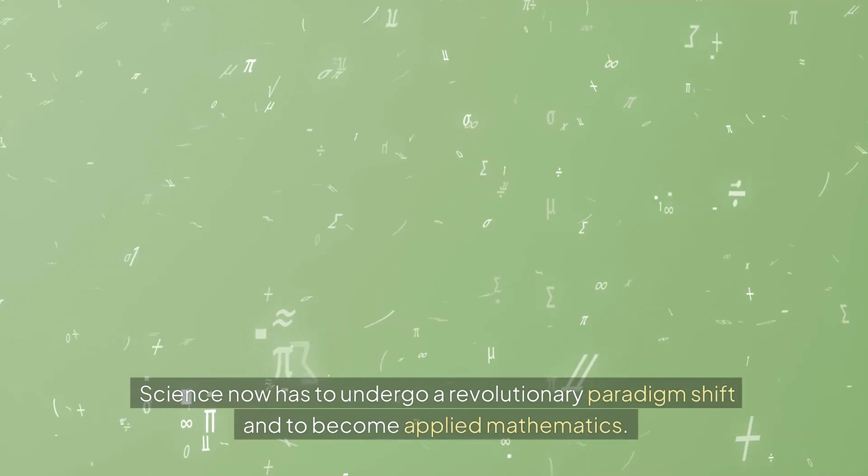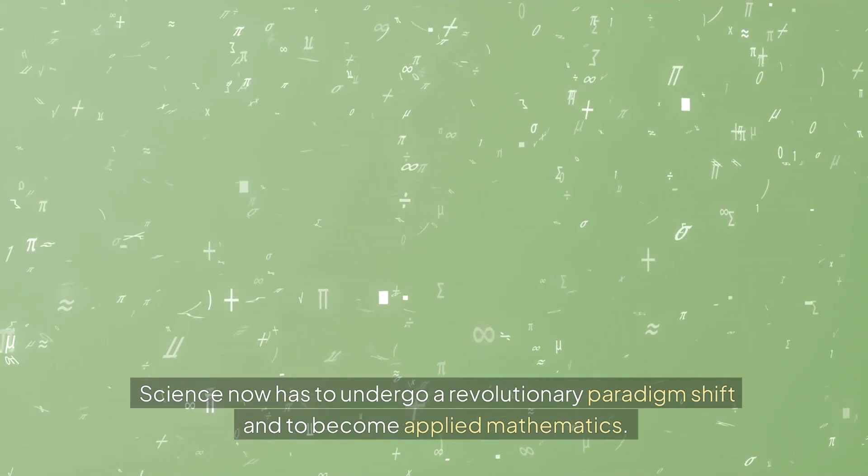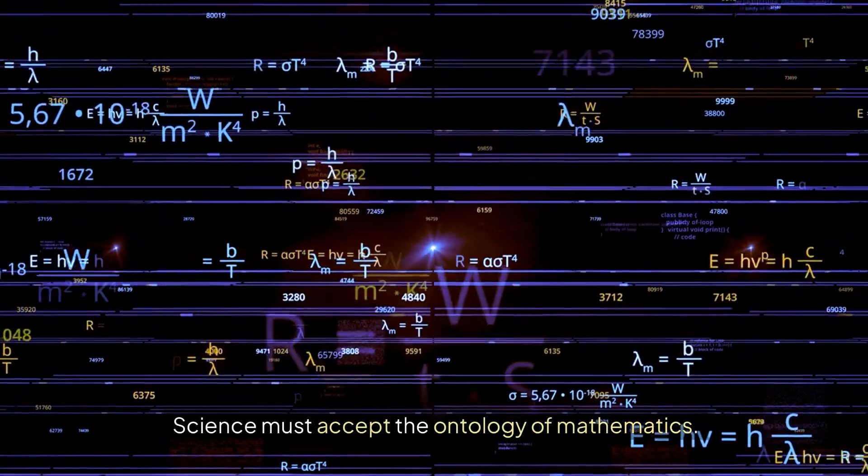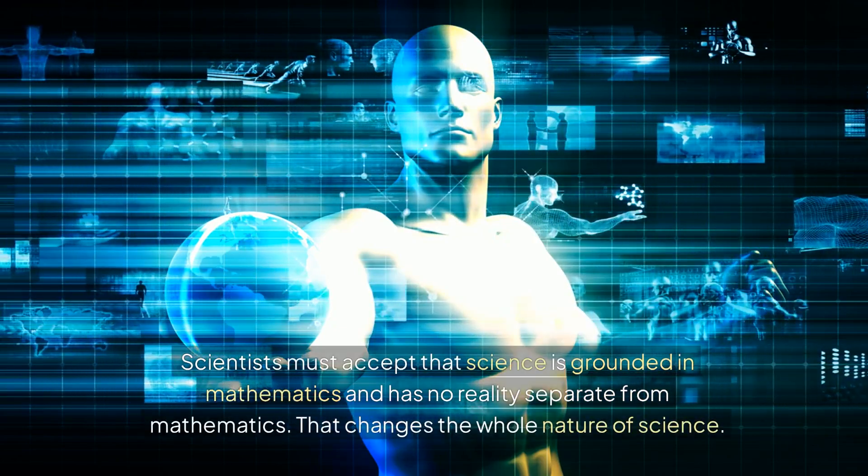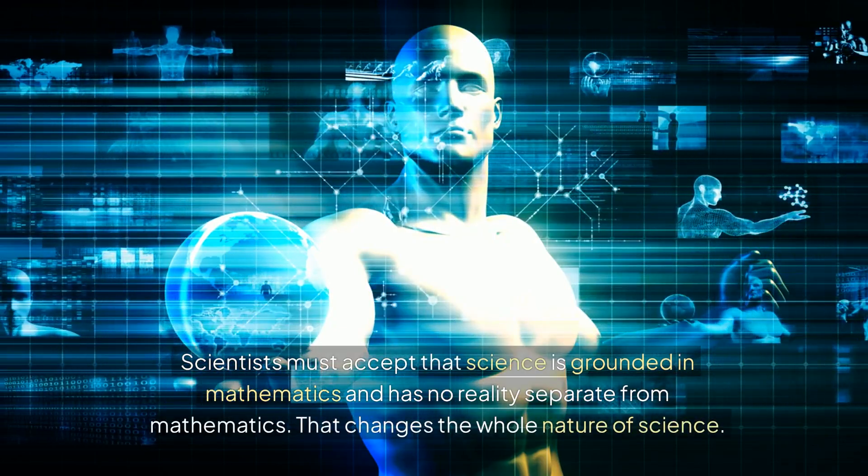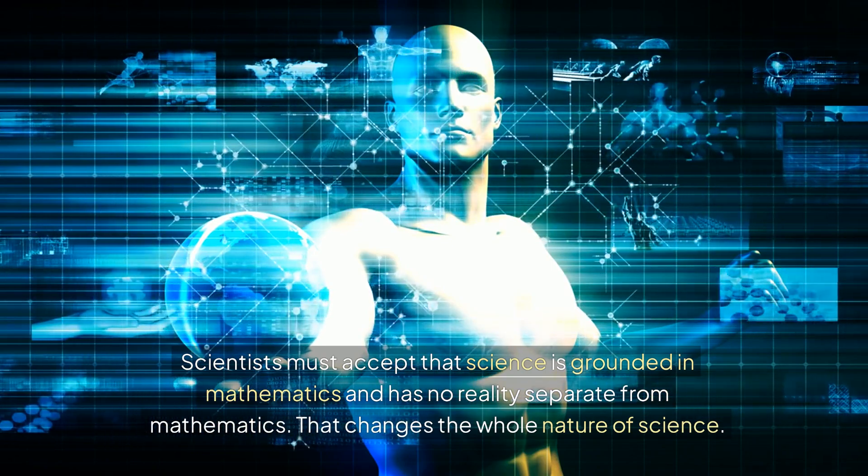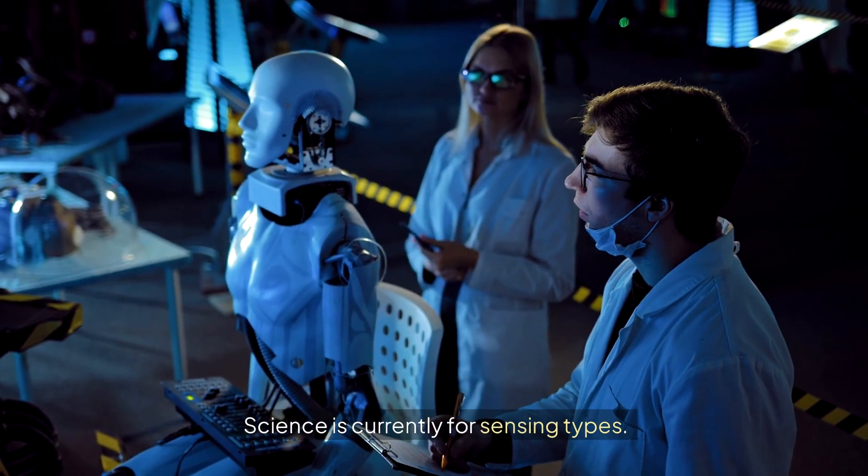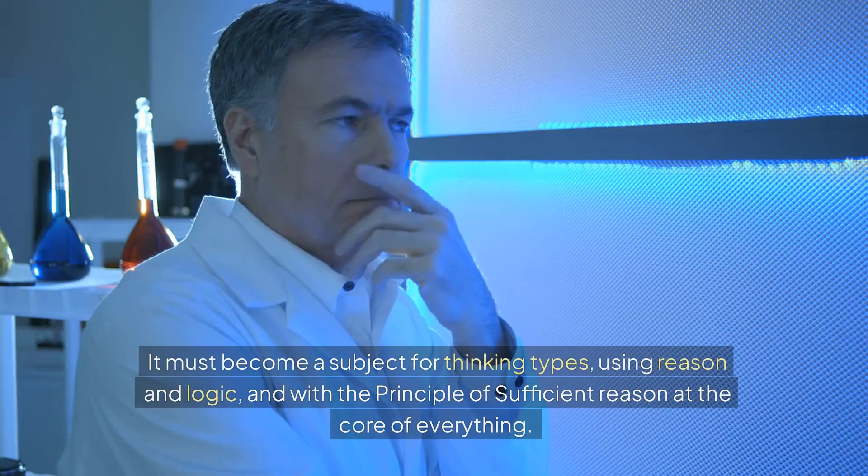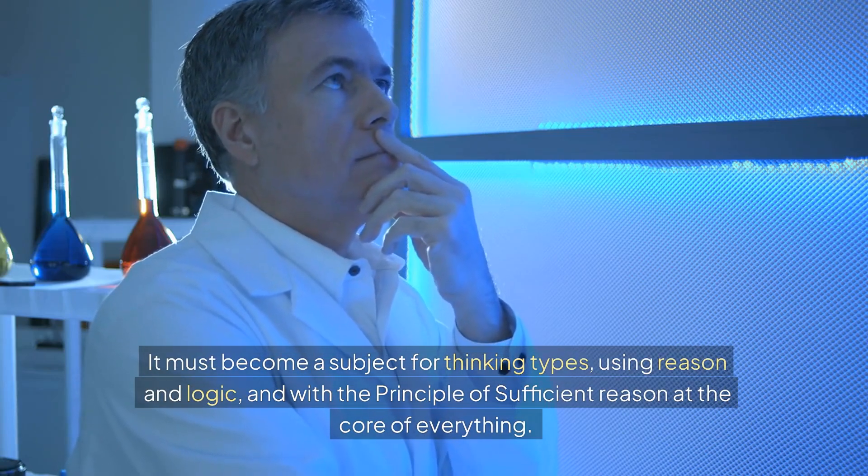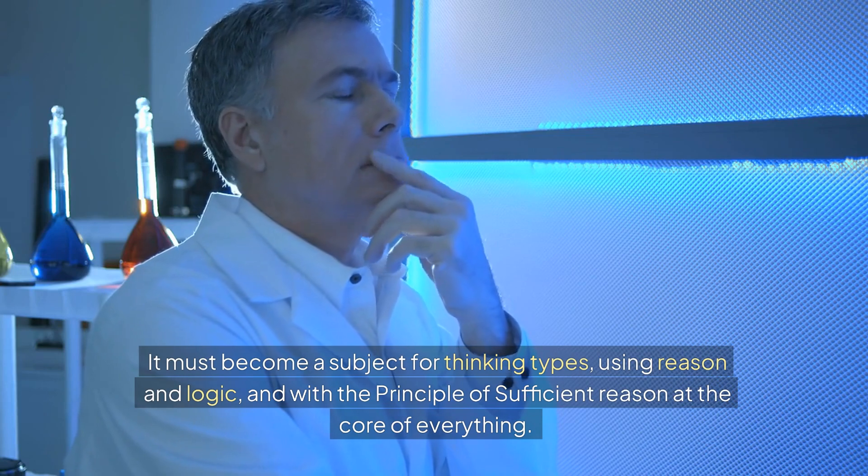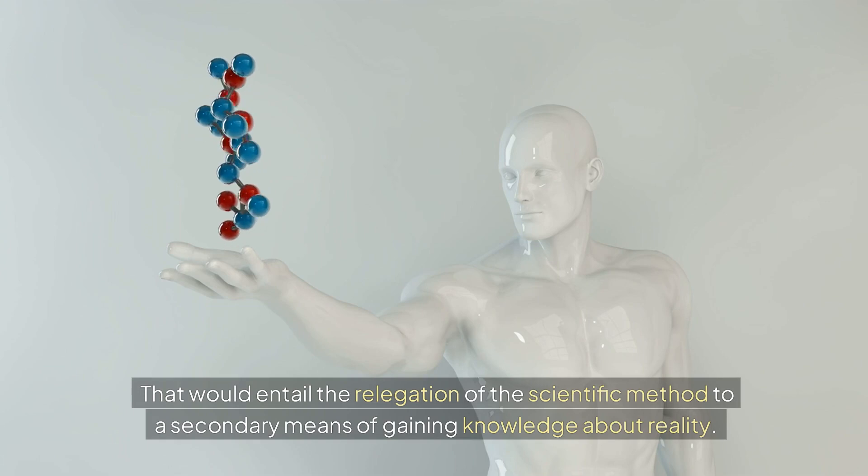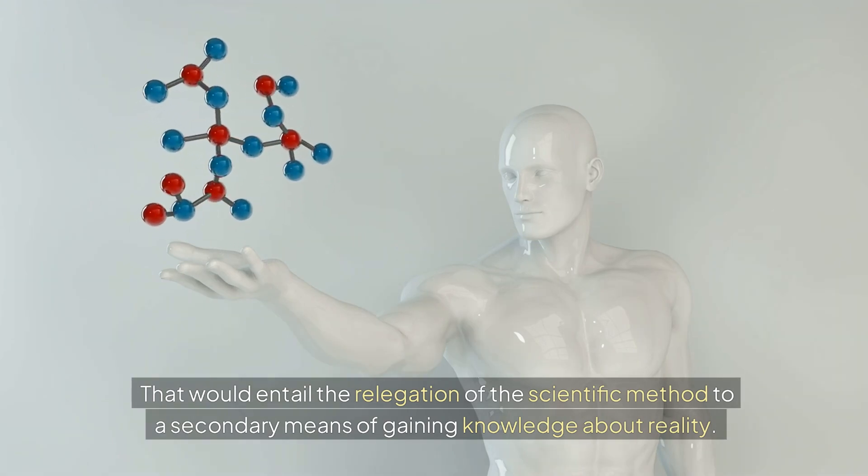Science now has to undergo a revolutionary paradigm shift and become applied mathematics. Science must accept the ontology of mathematics. Scientists must accept that science is grounded in mathematics and has no reality separate from mathematics. That changes the whole nature of science. Science is currently for sensing types. It must become a subject for thinking types, using reason and logic, and with the principle of sufficient reason at the core of everything.